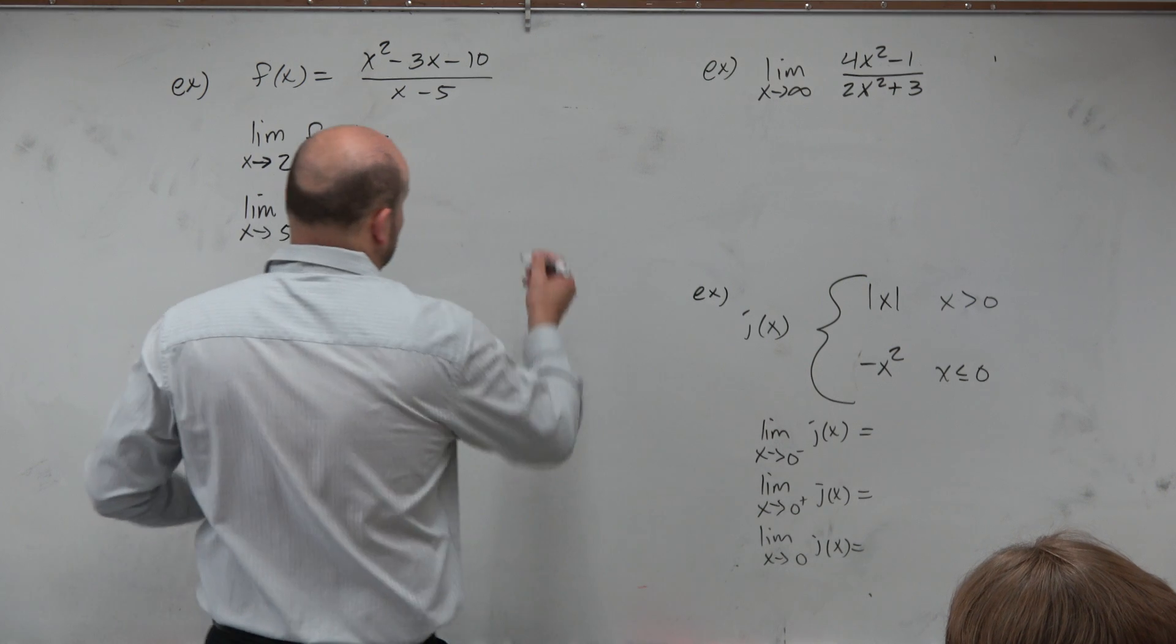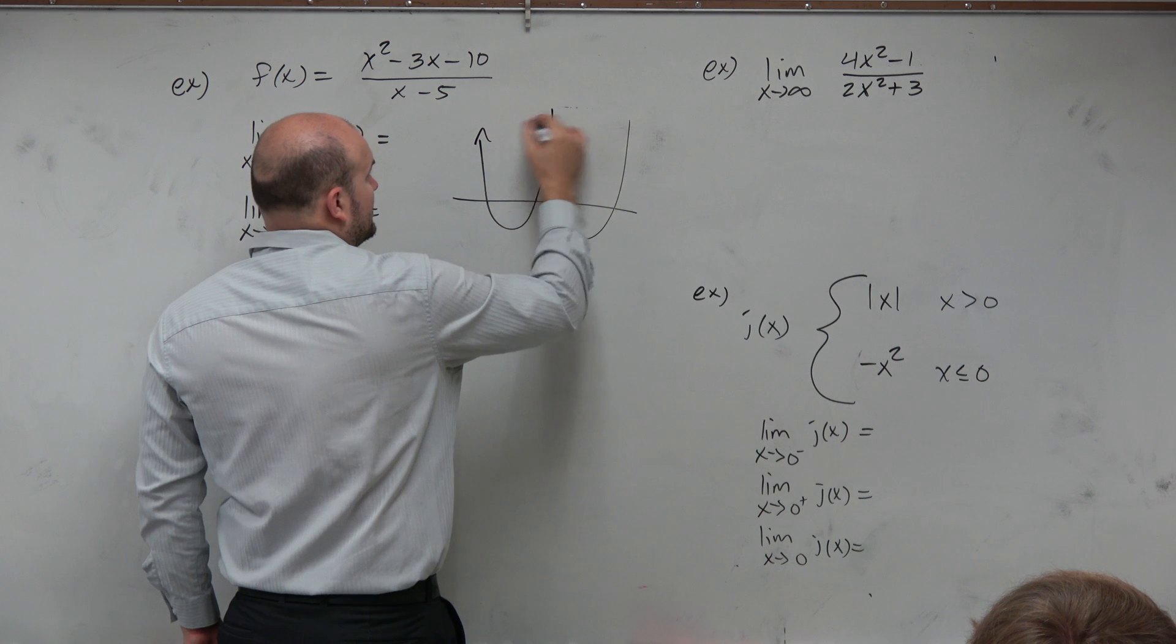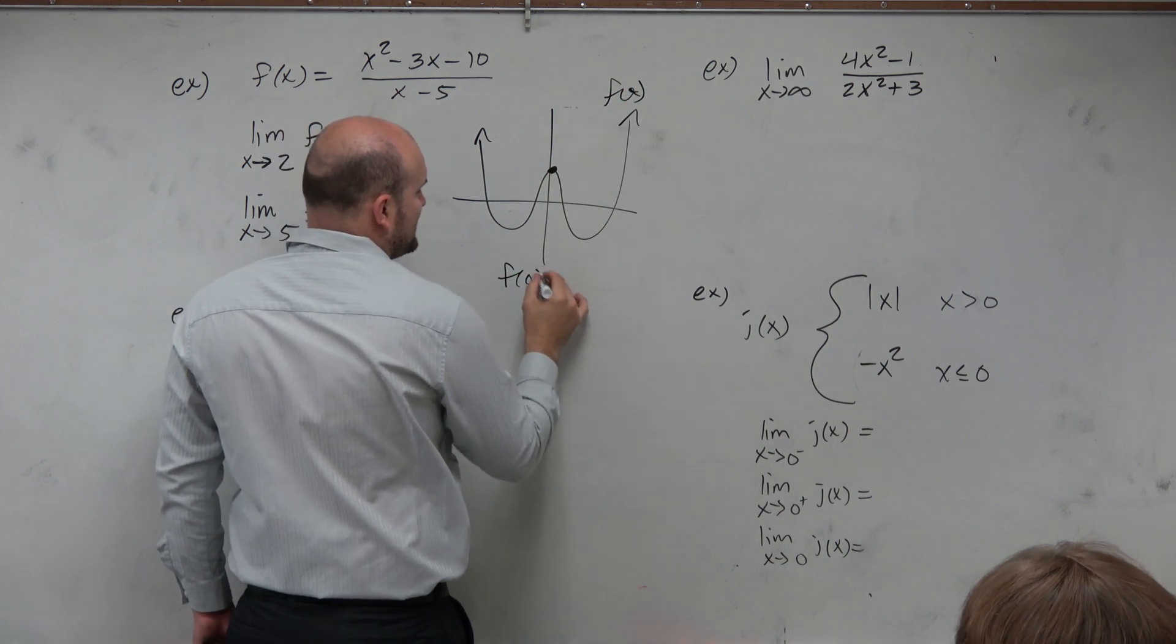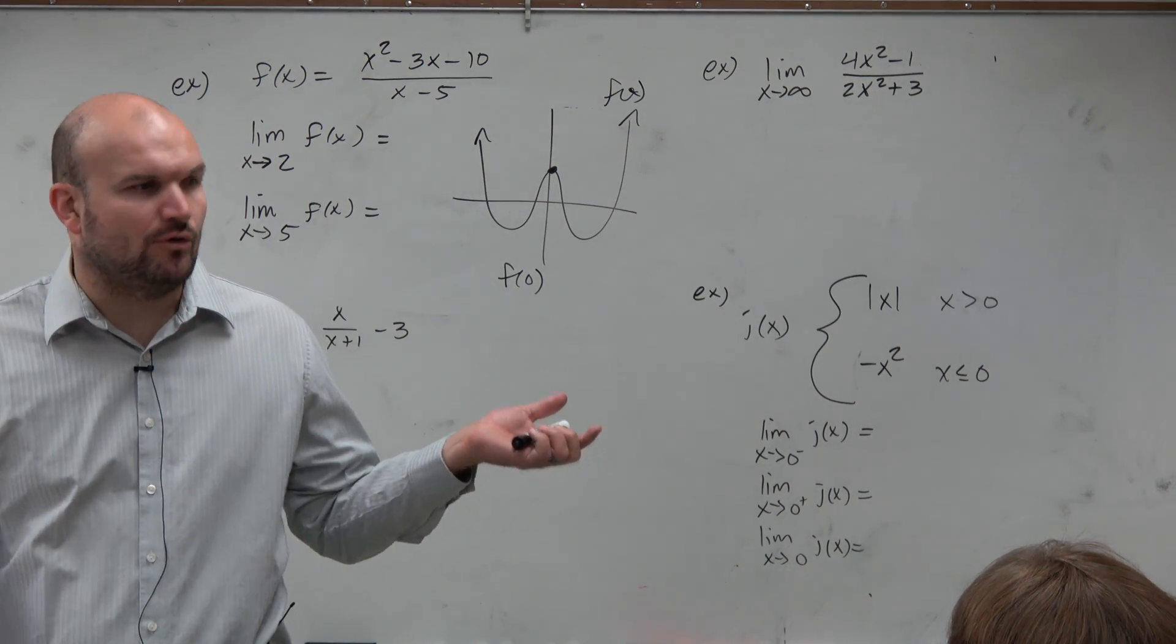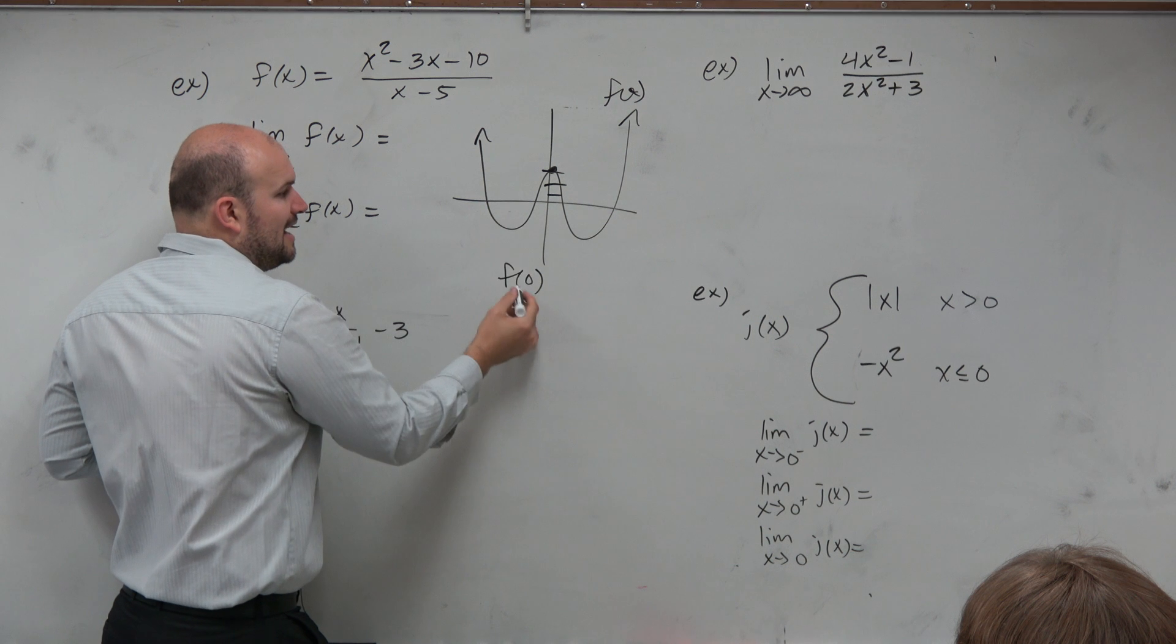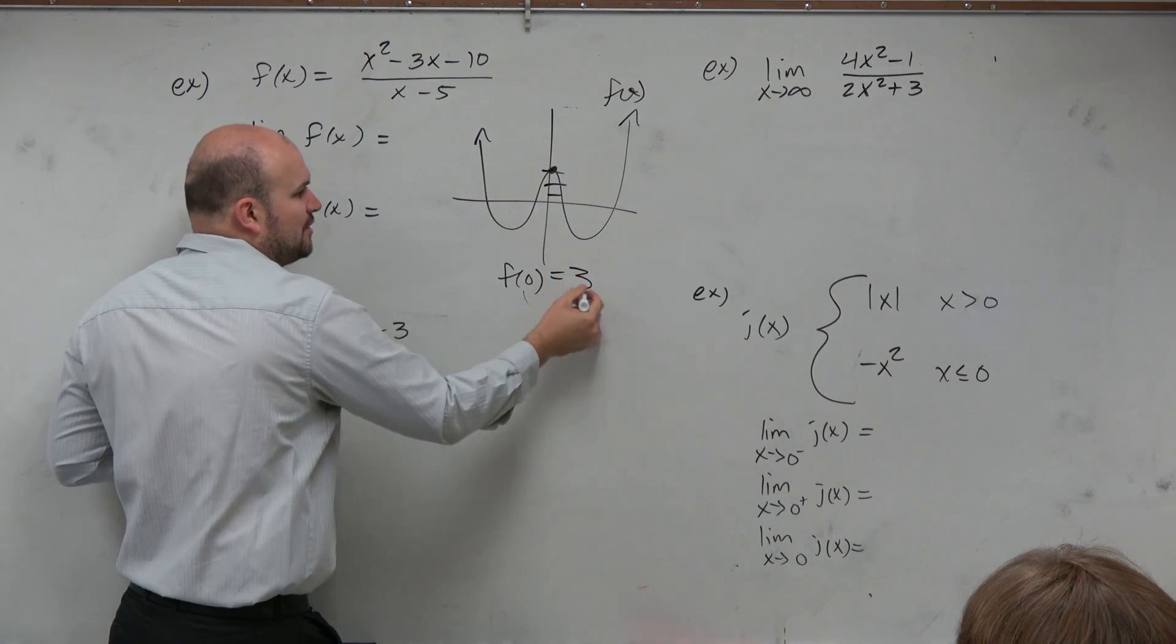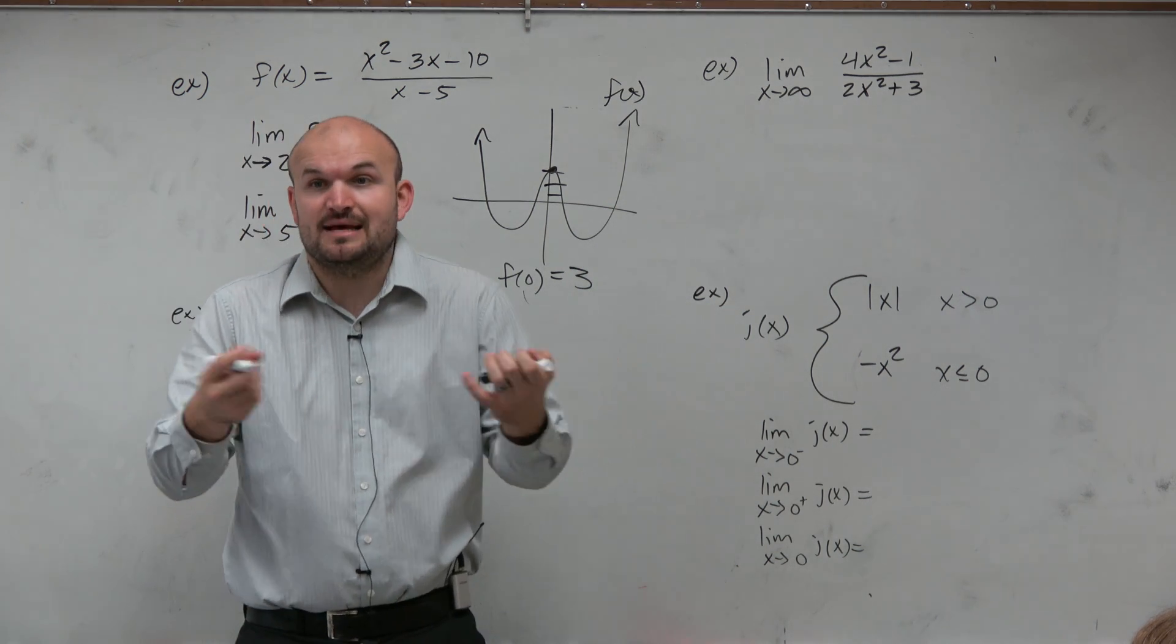Going back to something we did first, if you guys remember this problem, that function. I said, what is f of 0? I made up some random equation for that function. We didn't really know what 0 was, but we knew you could just look at the graph and say that if you plugged 0 in, your output value was 3. We knew the value of that function at that point.